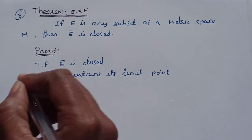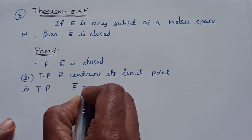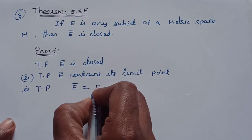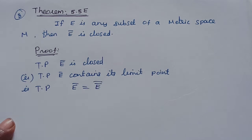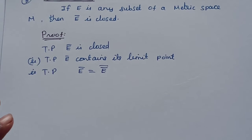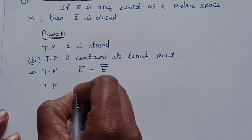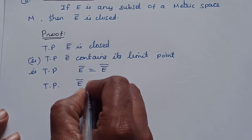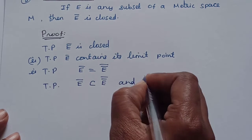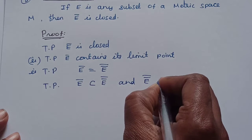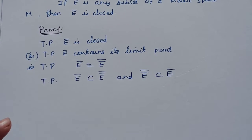To prove E-bar is closed, we will show E-bar equals E double closure. To prove two sets are equal, we show each is contained in the other: we prove E-bar is contained in E double closure, and E double closure is contained in E-closure.